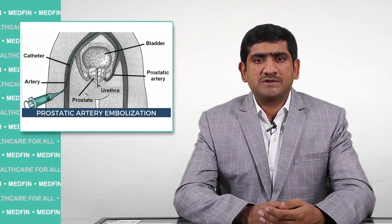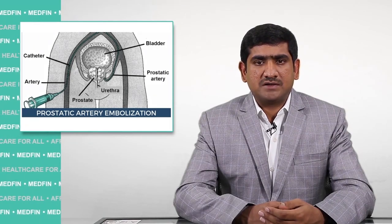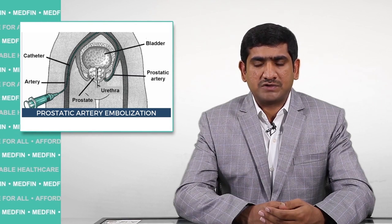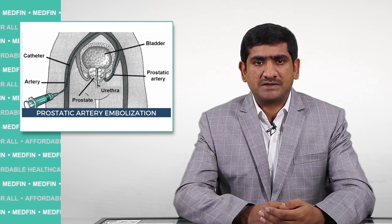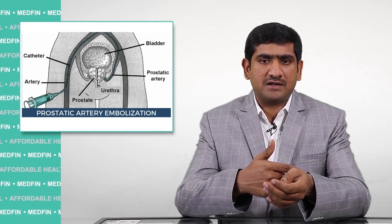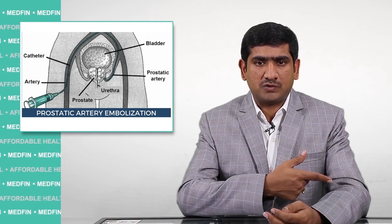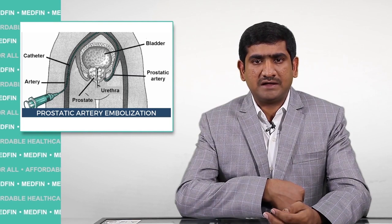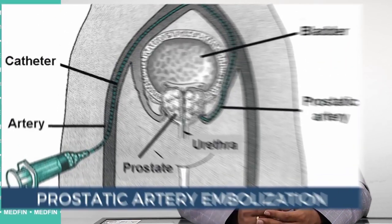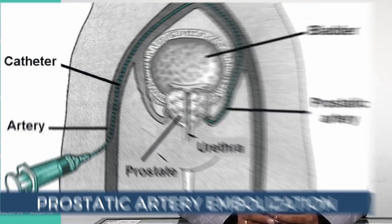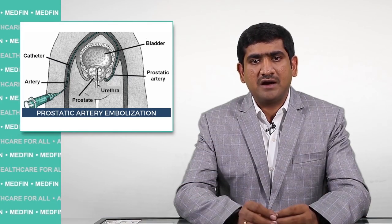Prostatic artery embolization is the selective embolization of prostatic arteries to shrink benign prostatic hyperplasia. We enter through the radial artery in the hand, travel through the aorta, and then selectively reach the prostatic artery, embolizing only the prostatic arteries under local anesthesia while the patient remains in a conscious state.